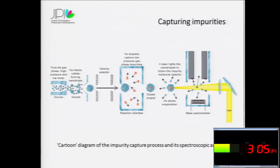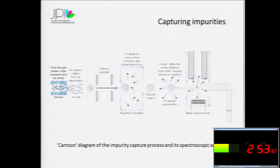Well, in this slide, I show a simplified scheme of how experimentalists get these doped droplets. First of all, we have pure helium gas phase at high pressure and low temperature.